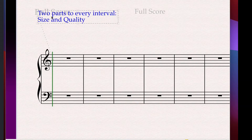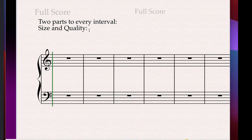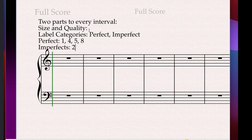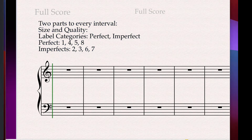When it comes to quality, we have two categories of labels: intervals that can be perfect, and those that can't. The perfect intervals are 1s, 4s, 5s, and octaves. The imperfects are 2, 3, 6, and 7ths. You just check the size and you know — if it's a unison, 4th, or 5th, you mark it as a perfect category. If it's 2, 3, 6, or 7th, it's imperfect.